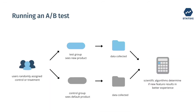Today we'll discuss what an A-B test is. An A-B test is a simple, controlled experiment. We assign users randomly to two groups: control and treatment groups.